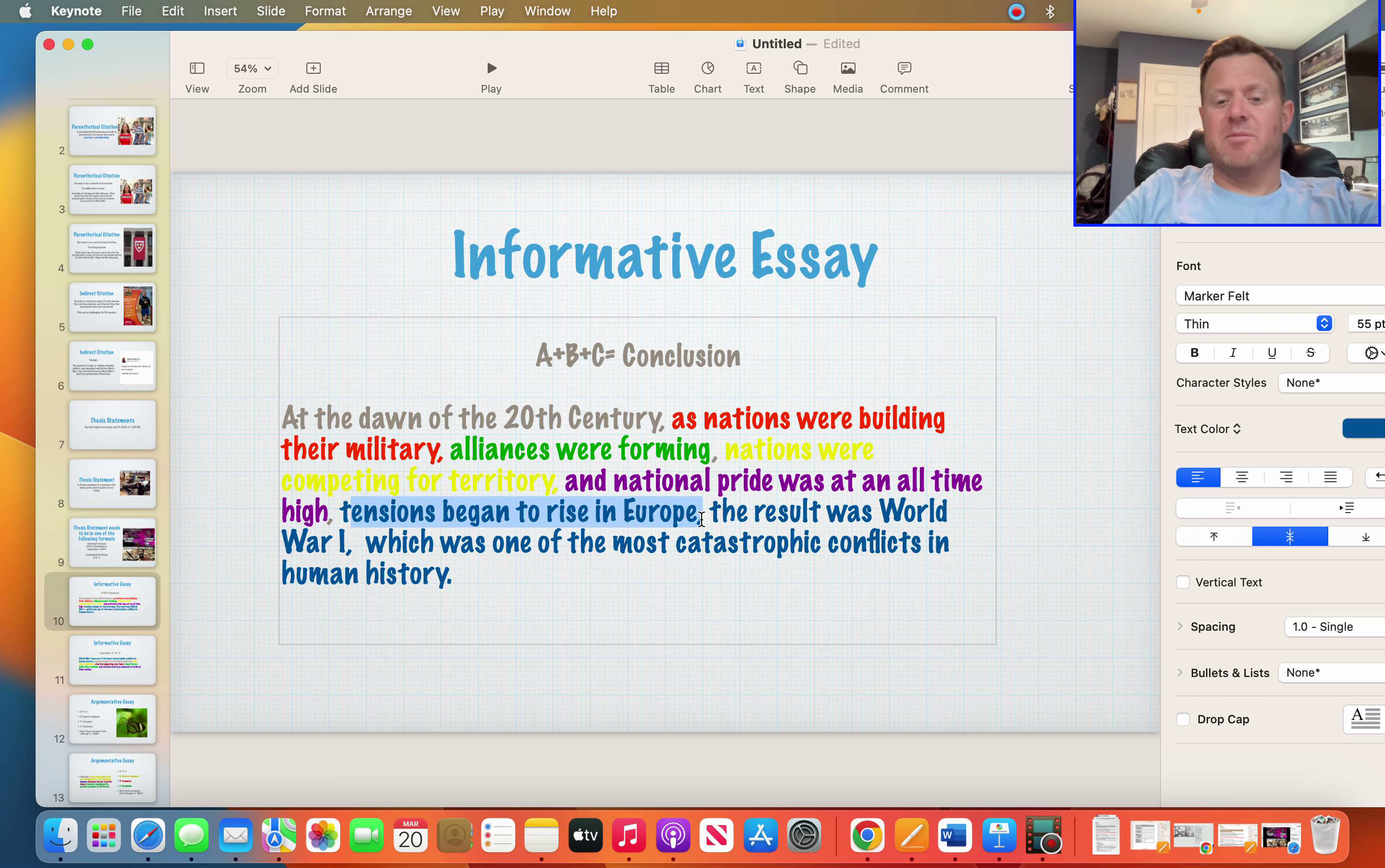And that's kind of the hard part right here. Tensions began to rise in Europe, and the result was World War I, which was one of the most catastrophic conflicts in human history. That's what my paper boils down to, and that's what you're looking for. So big point one, big point two, big point three, and then in a couple words, what does your paper boil down to?